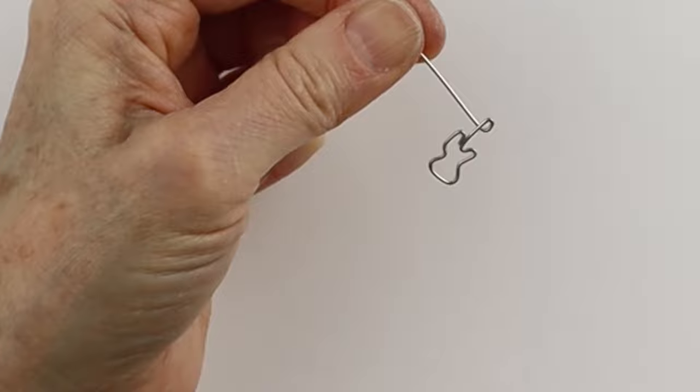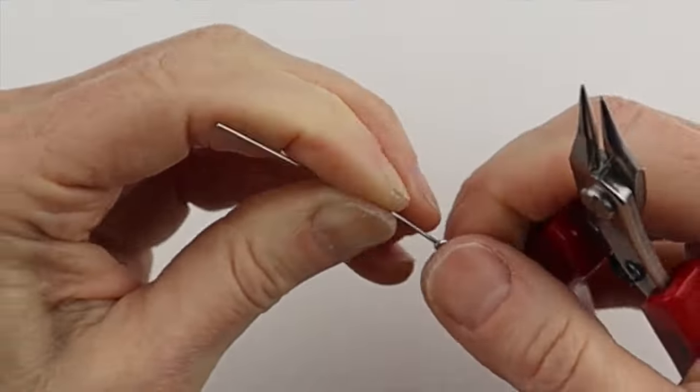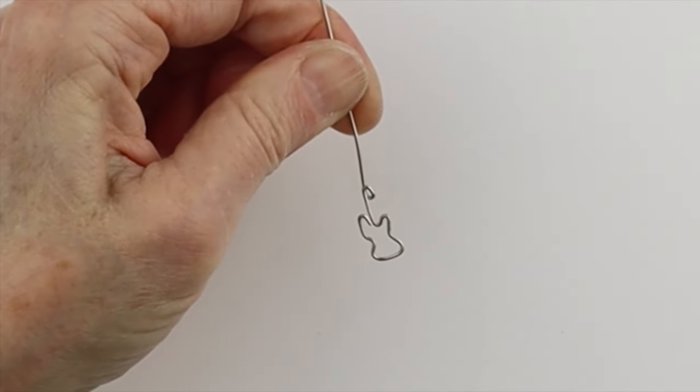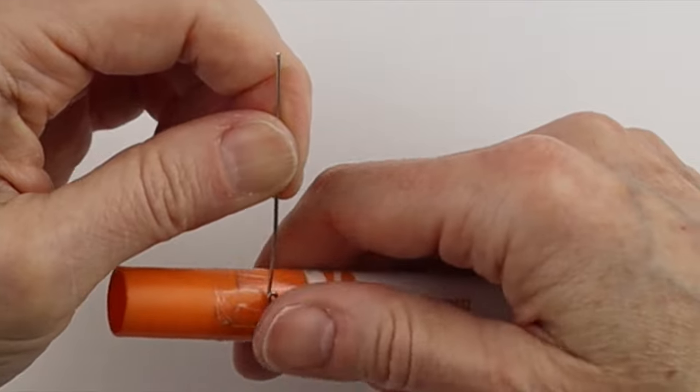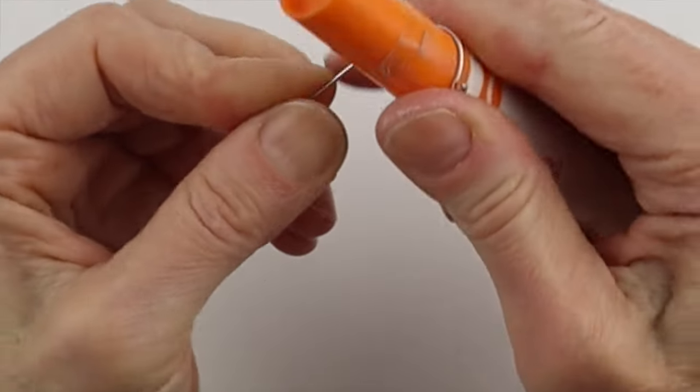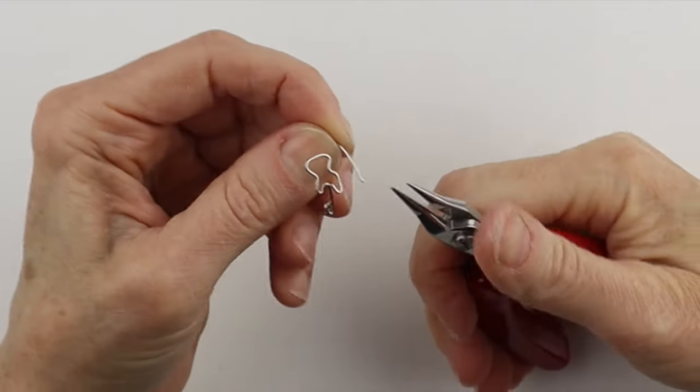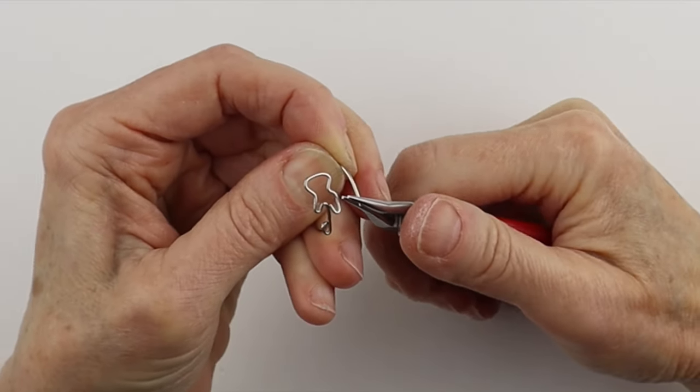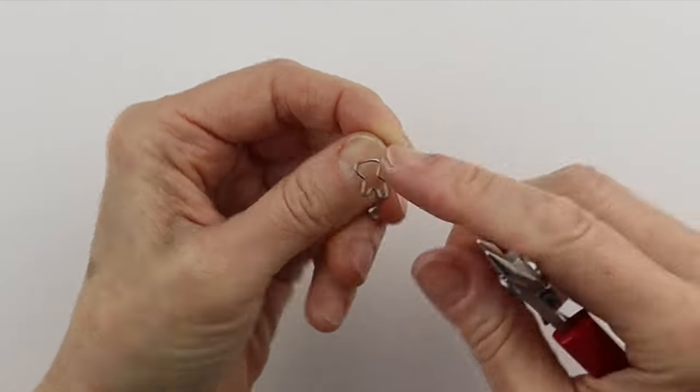Sometimes it's easier to grab it with the round pliers and then push it straight up behind so we've got that little triangle. Then use a ring cone or round form and bring it around. This part's a little straight, so we just take the pliers and gently curve it around so it comes around the shape of the finger.